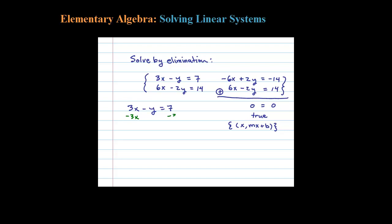I'm going to solve for y by first subtracting 3x on both sides, which leaves me with negative y equals negative 3x plus 7. Then dividing by negative 1, or multiplying by negative 1 either way, I'm left with y equals 3x minus 7.